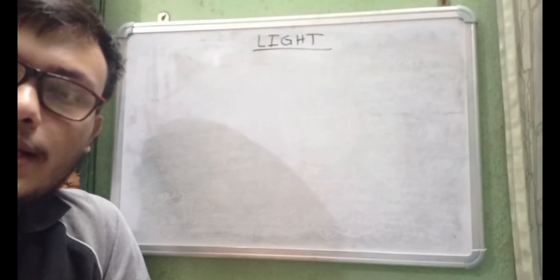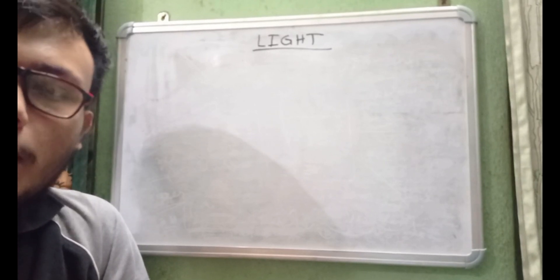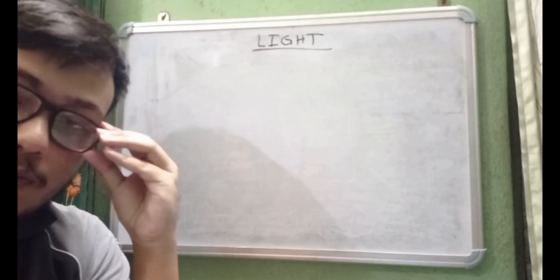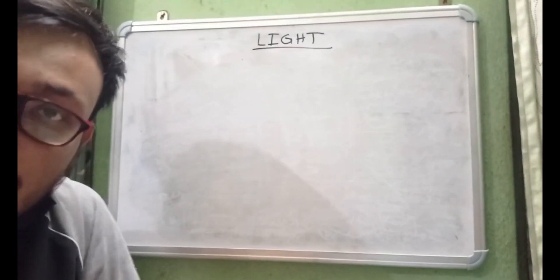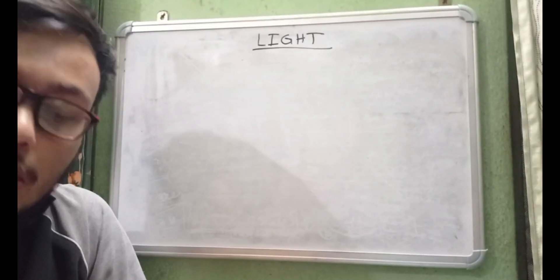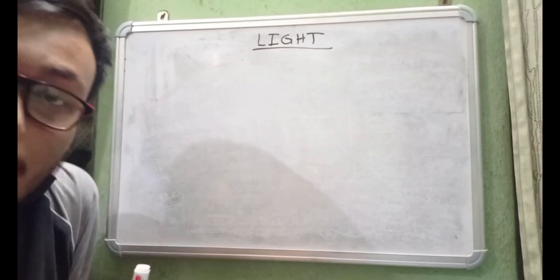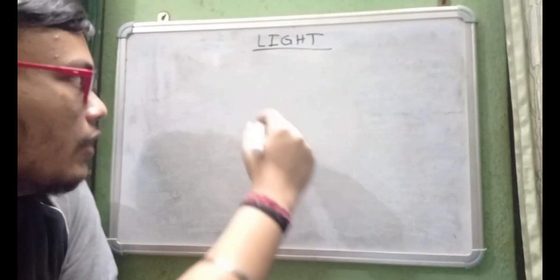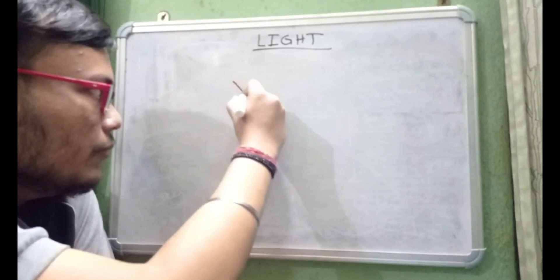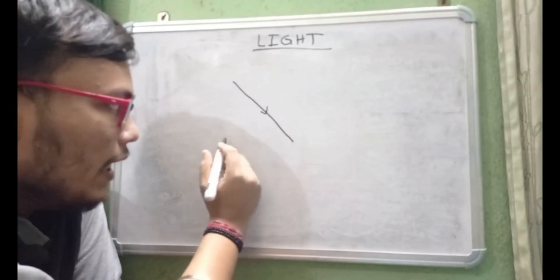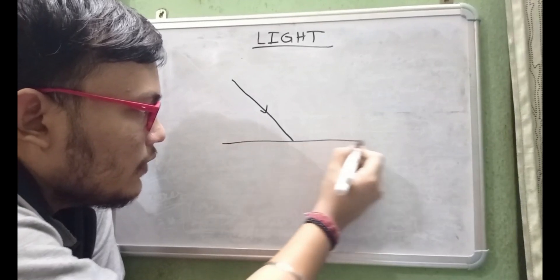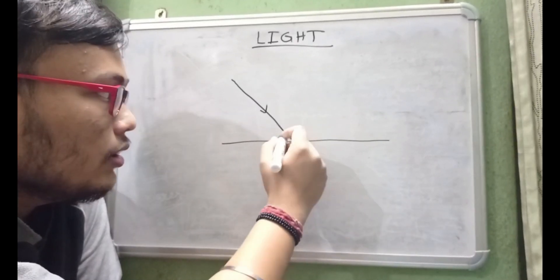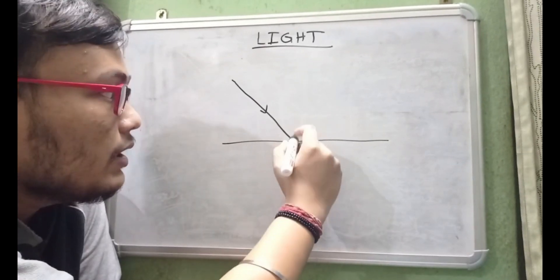Hi everyone, welcome to our channel Helm of Science. In my previous videos I was discussing the chapter Light, focusing on the reflection of light. As a recap, a ray of light traveling through an optical medium, when it falls on an opaque surface, will be reflected back into the same medium.